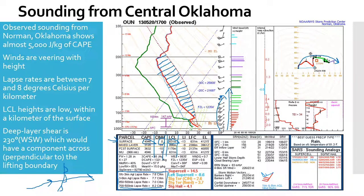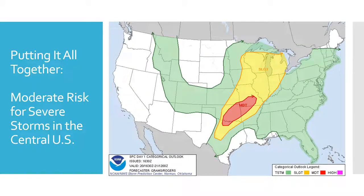Putting all of these factors together, the Storm Prediction Center had a moderate risk for severe weather as indicated by the red polygon here in the central United States. That was at the time essentially a level three out of four — the second highest level they could give to a severe weather event. That moderate risk encompasses much of central and eastern Oklahoma where we had our high CAPE values and high shear values, and it even extends into Arkansas and Missouri where we also had favorable conditions for severe weather.